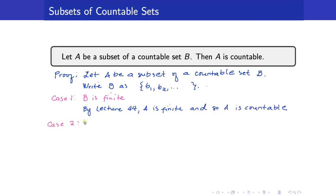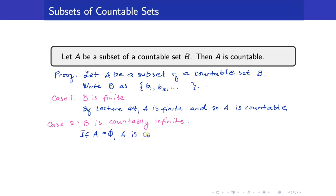For case 2, B is countably infinite. Here we consider subcases for A. If A is empty, then automatically A is countable because it is finite. So we now suppose A is not empty — call this case 2B. We will show that either A is finite or A is countably infinite.